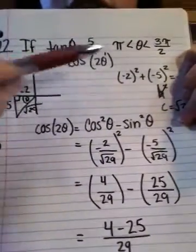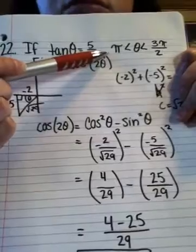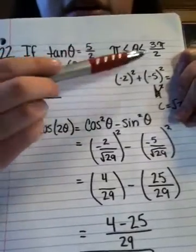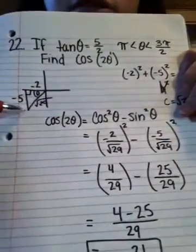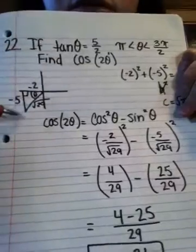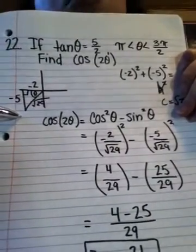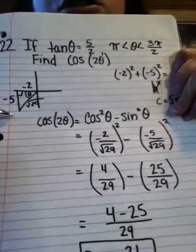Our restriction here shows that we are in the third quadrant because our restriction is between pi and 3 pi over 2. Also, the tangent is positive, which makes sense because the tangent is only positive in the first and third quadrants.